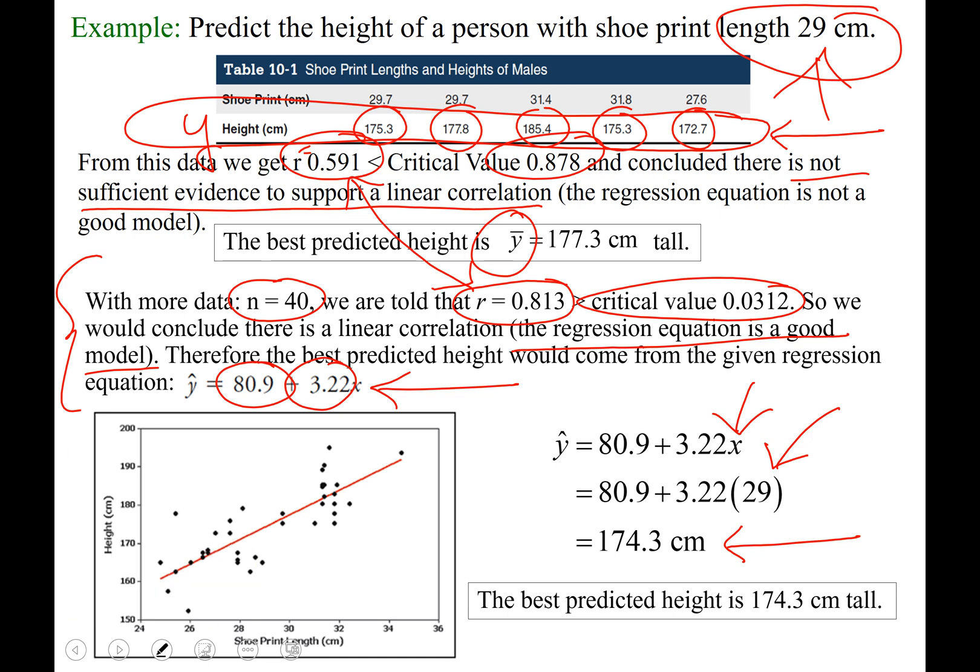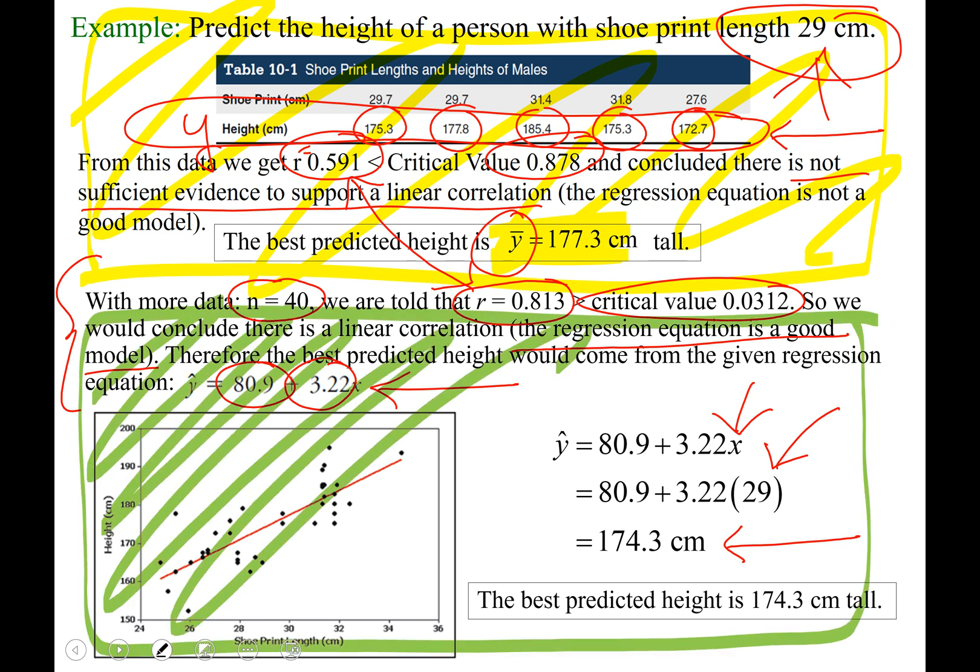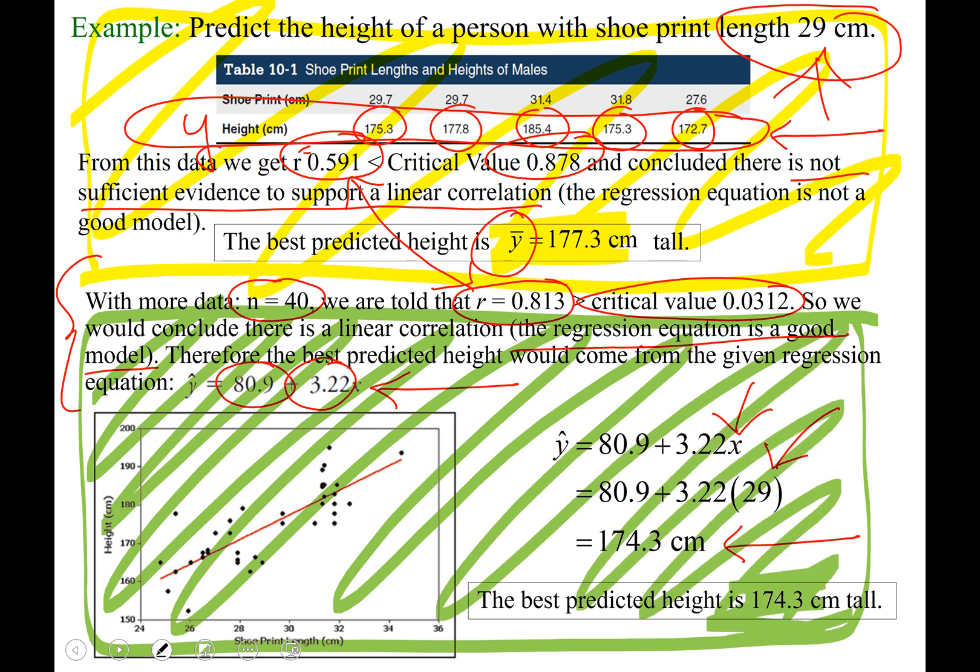It's nice to see these two side by side. Everything up here was leading to this prediction of 177.3 centimeters tall, and that all came from us saying the regression equation was not a good model. Everything down here was all leading to our prediction that that person is 174.3 centimeters tall, and that came from our conclusion that our regression equation was a good model. Compare the top screen and the bottom half of the screen. Rewind and watch that again if you need to.